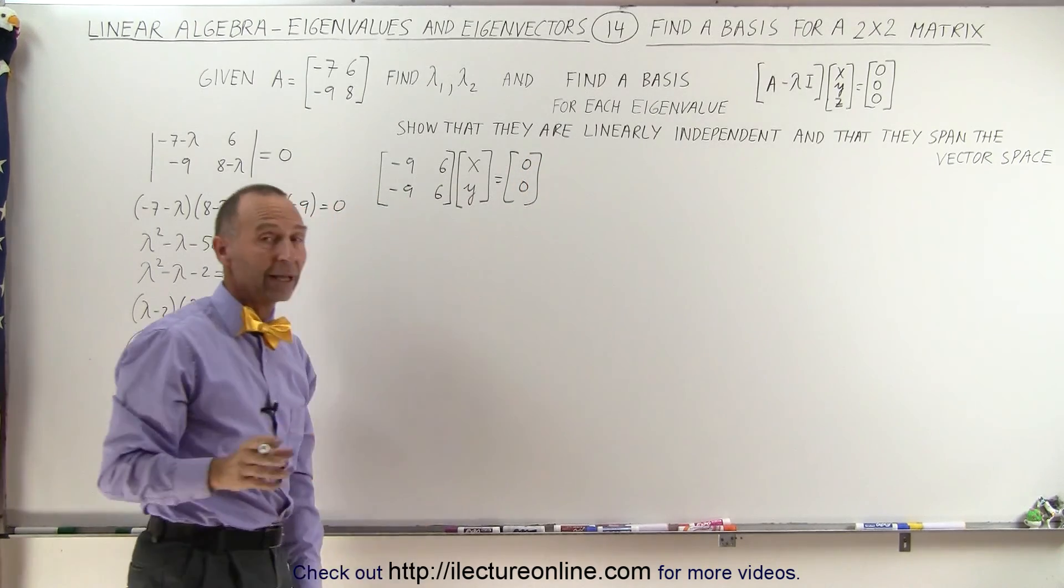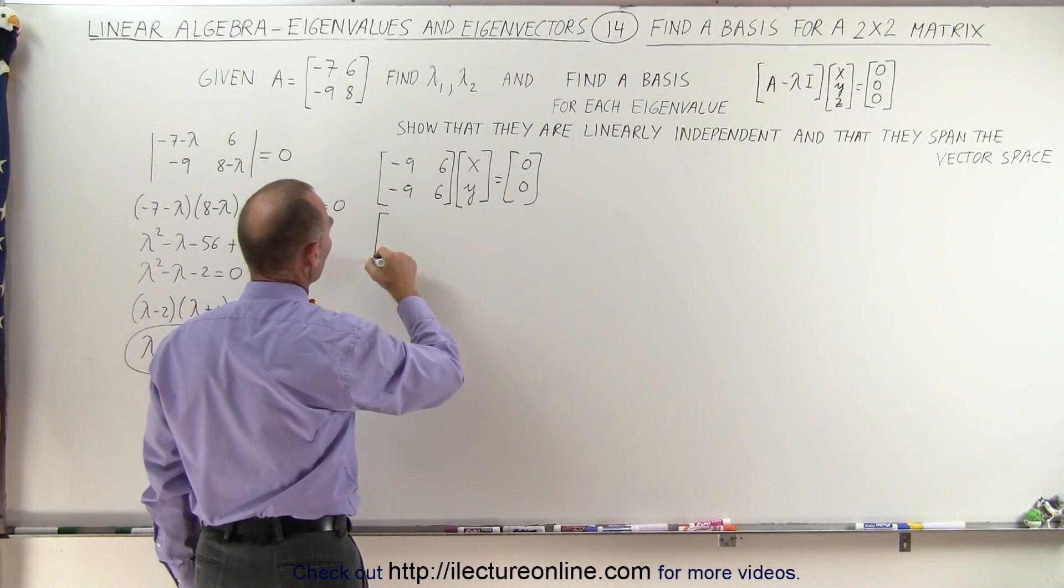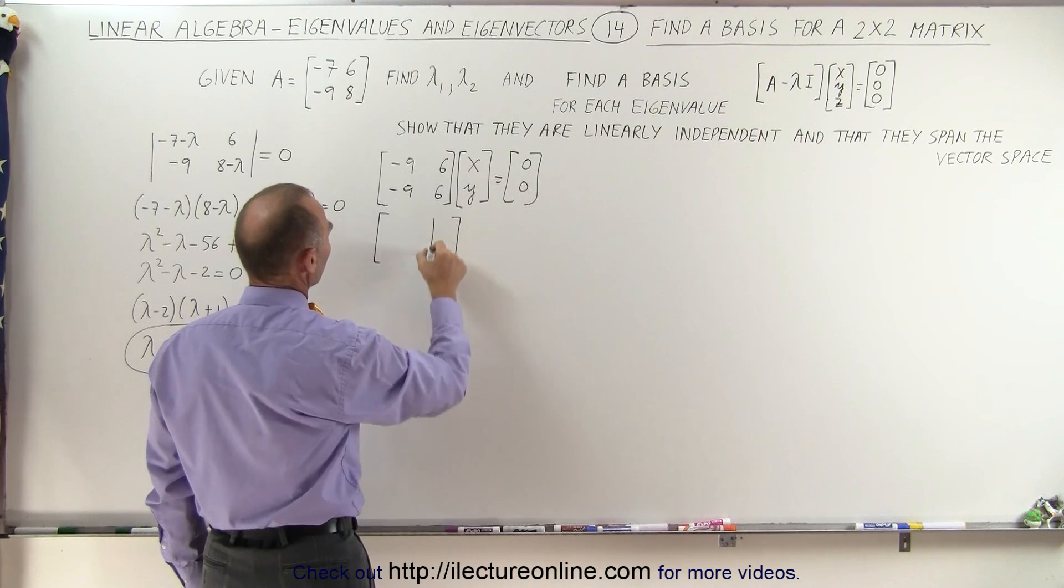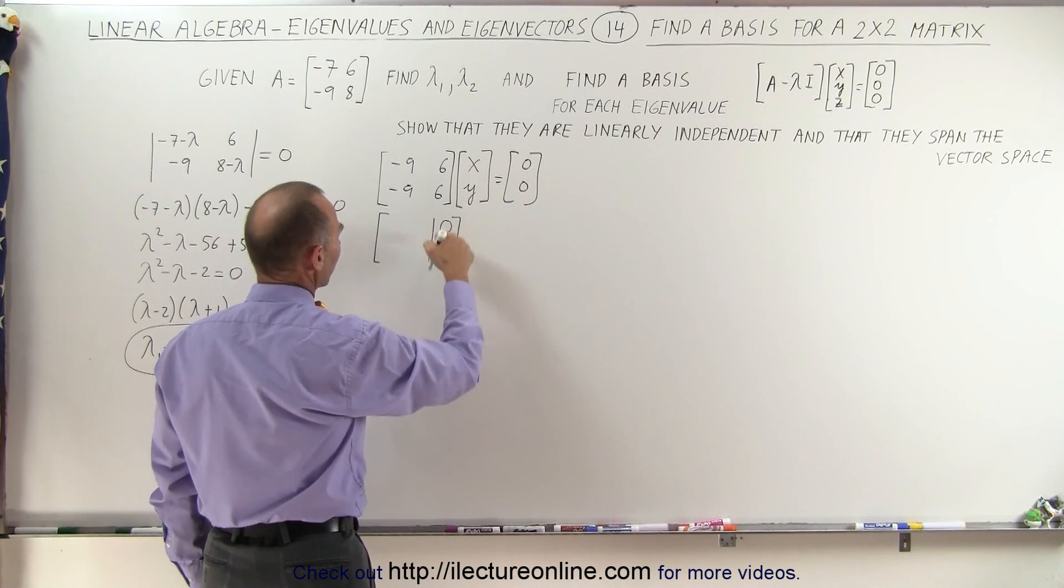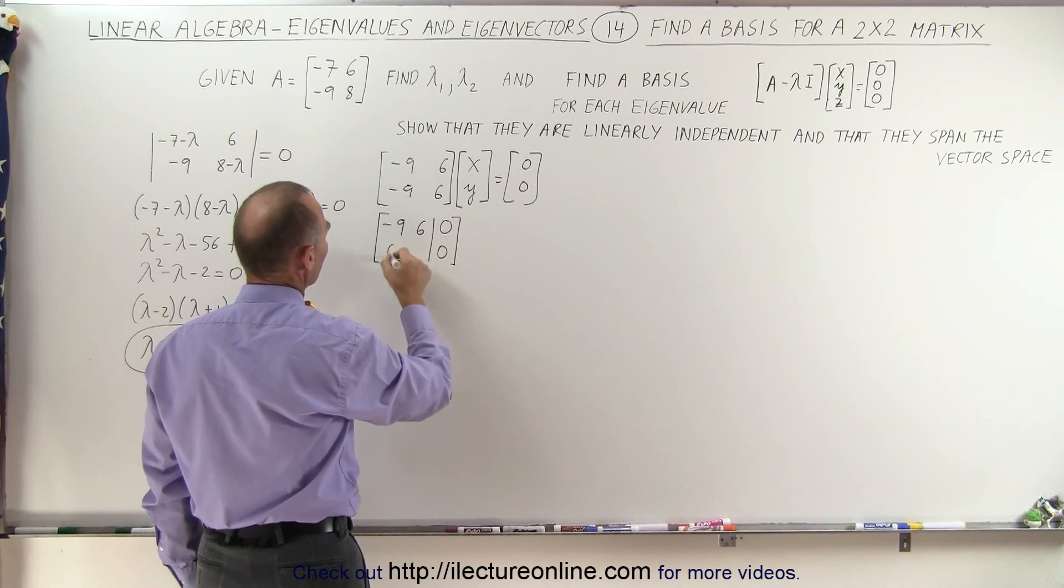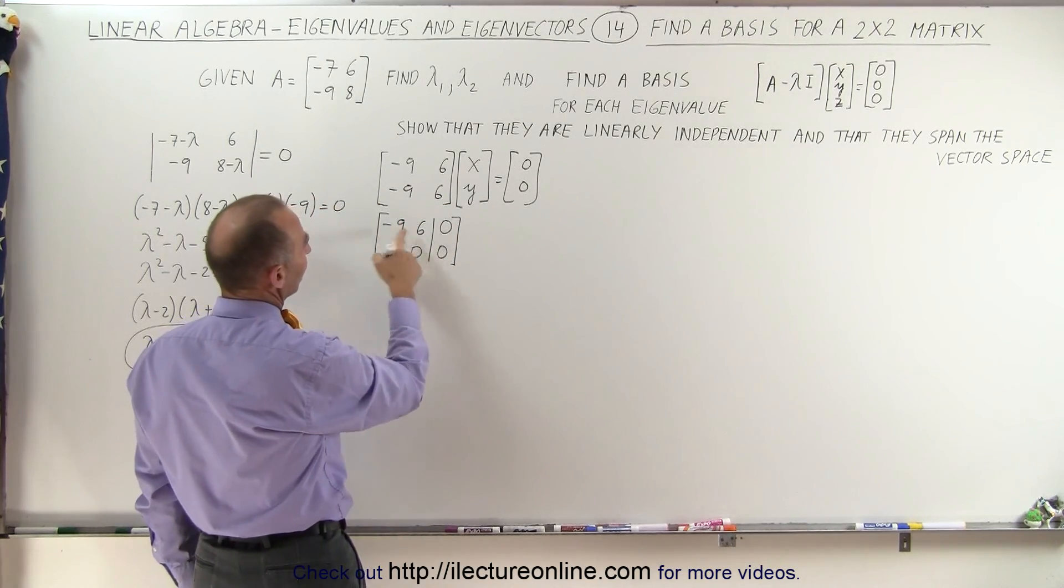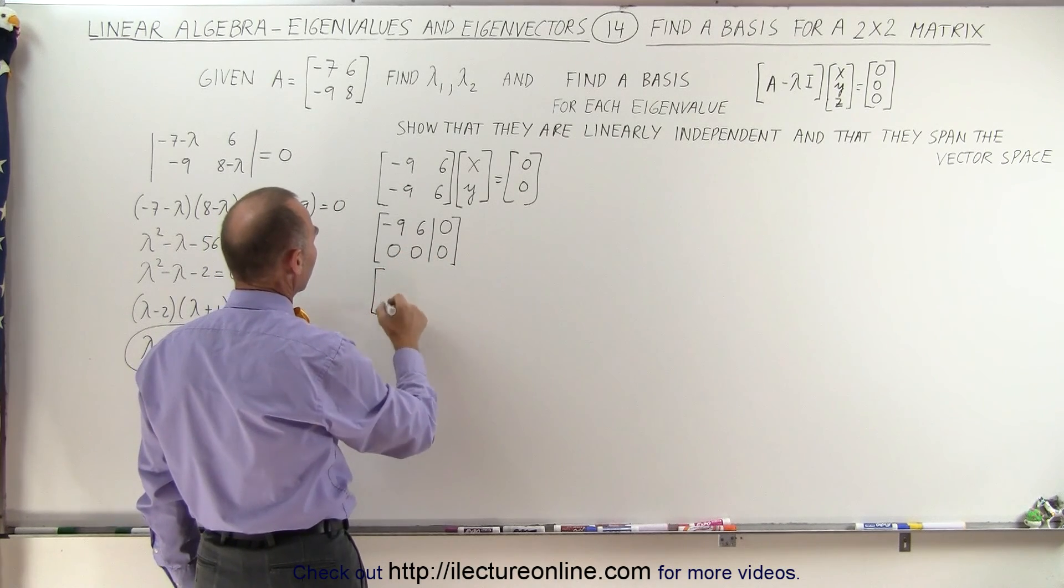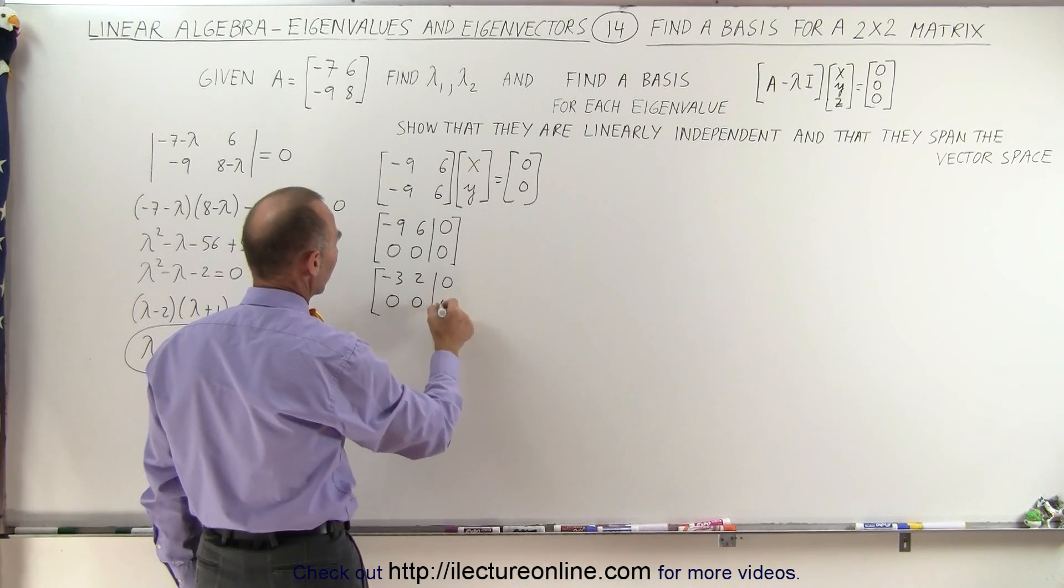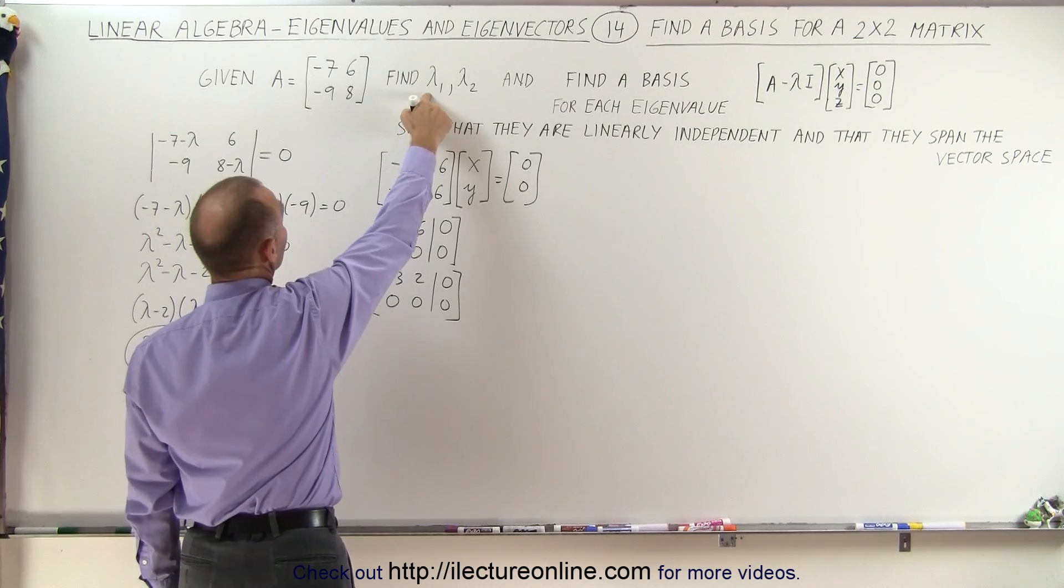Right away we realize that when two of the rows are the same, we can eliminate one of the rows. We're going to write that in the reduced row echelon form if possible. So this is the augmented matrix with 0, 0's there. We have a minus 9 and a 6, and this disappears and becomes 0, 0. We can also divide the first row by 3, so then we can write this as minus 3, 2, and 0, 0, 0, 0.